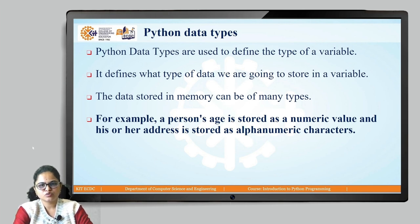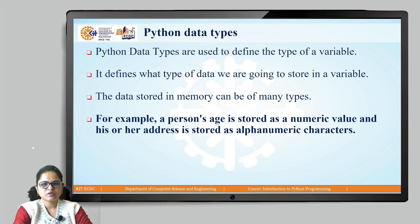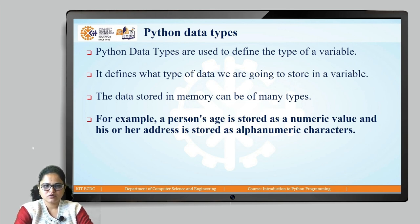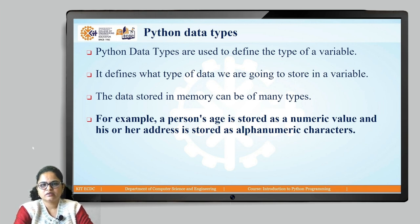Python data types are used to define the type of a variable — what kind of value we are going to store in a variable. The data stored in memory can be of many types. For example, a person's age is stored as a numeric value and their address is stored as alphanumeric characters.